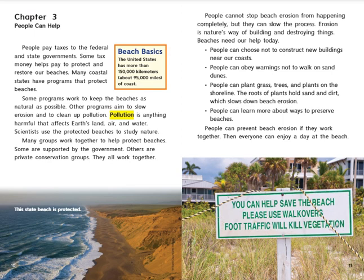People cannot stop beach erosion from happening completely, but they can slow the process. Erosion is nature's way of building and destroying things. Beaches need our help today. People can choose not to construct new buildings near our coasts. People can obey warnings not to walk on sand dunes. People can plant grass, trees, and plants on the shoreline. The roots of the plants hold sand and dirt, which slows down beach erosion. People can learn more about ways to preserve beaches.